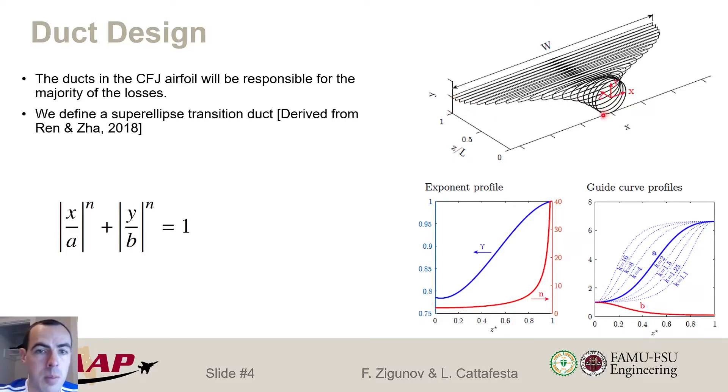We're not going to spend too much time here. This is a fan that is inspired by Ren and Zha's design, where we transition from a circular geometry from the fan, which would have a circular cross-section, into a slot where we're going to be blowing the jet. This is based on a super ellipse. As we increase this exponent n on the super ellipse, we make the corners of the circle or ellipse more and more sharp, and then eventually it becomes a rectangle. So details are on our paper.